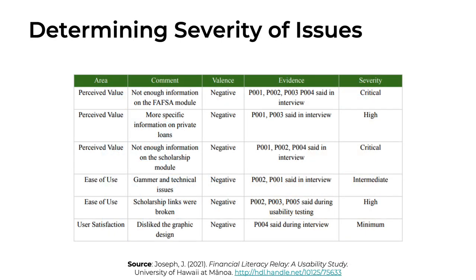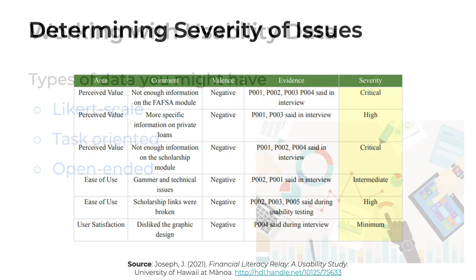Here's one last example from Johnny. It's in the form of a table with five columns: area, comment, valence (that's another word for sentiment), evidence, and most importantly, severity. This table only reports negative comments. What's notable is how Johnny ranked these comments by their level of severity, using a range of ratings from critical to high to intermediate to minimum. This was a nice way for him to look across all of his negative feedback and determine which ones were the highest priority — in other words, which usability areas were of most concern. An approach like this allows the designer to prioritize which issues to address through the revision process.